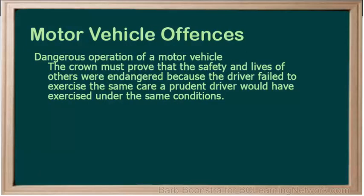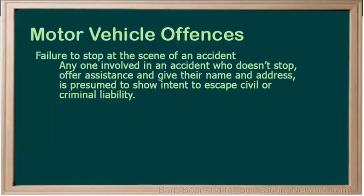There are a variety of motor vehicle offences. One is dangerous operation of a motor vehicle — the Crown must prove that the safety and lives of others were endangered because the driver failed to exercise the same care a prudent driver would have exercised under the same conditions. This is a hybrid offence. Failure to stop at the scene of an accident: anyone involved in an accident who doesn't stop, offer assistance, or give their name and address is presumed to show intent to escape civil or criminal liability. This is commonly known as a hit and run and is a hybrid offence.